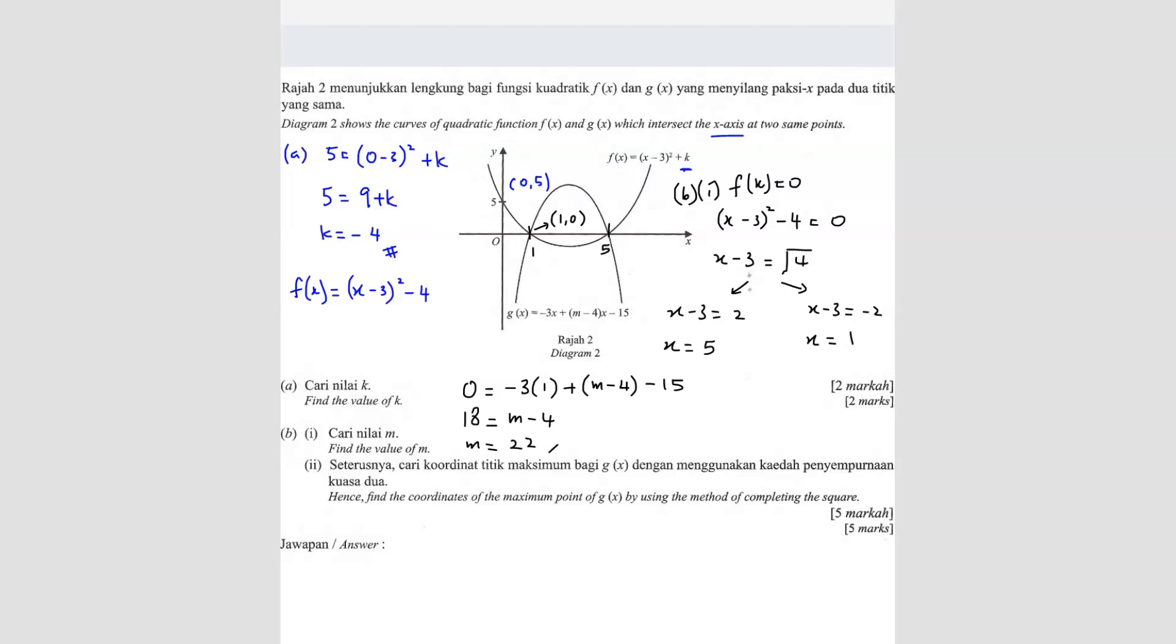So you found your m value. So your g(x) equation is going to be -3x + 22 - 4 is 18, so 18x - 15. I just want to write it so that we can use it in case. So this is g(x). All right, next one.